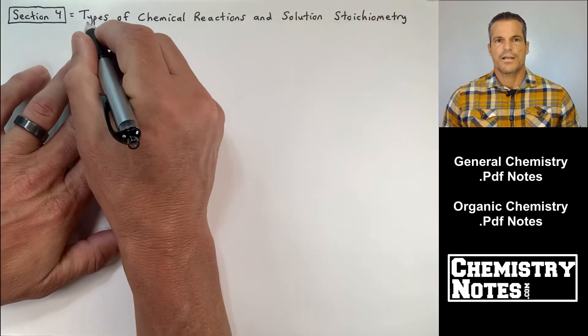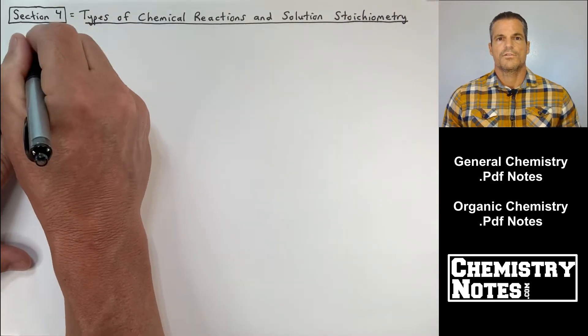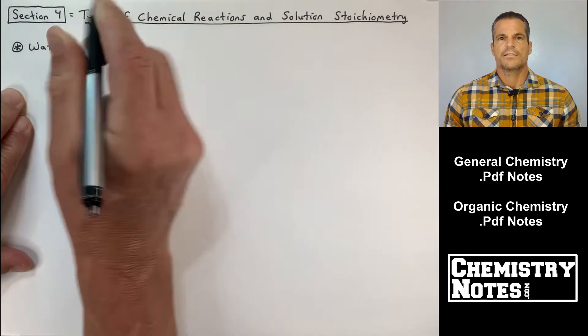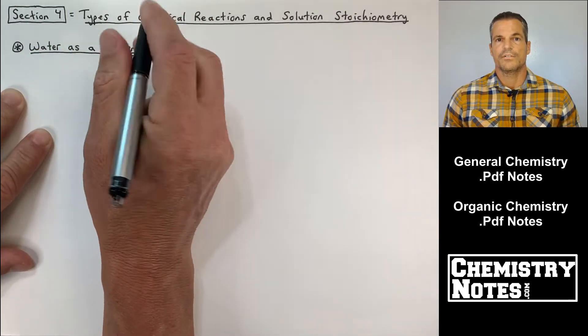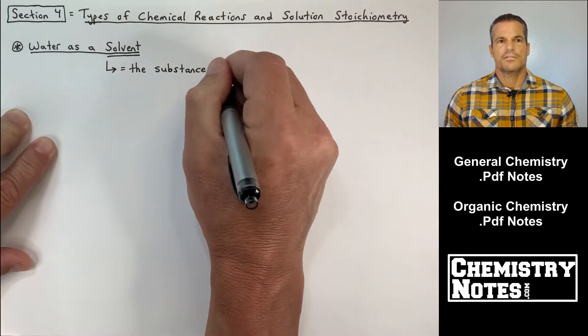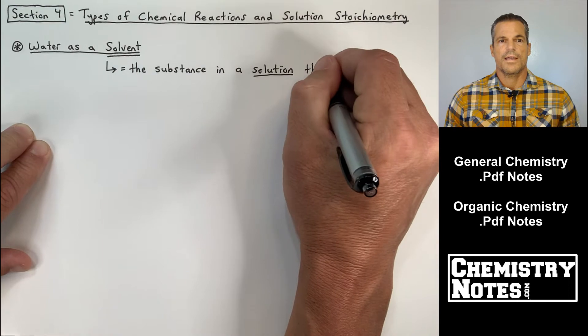So types of chemical reactions, which we'll do a little bit later on in the section, and solution stoichiometry we're going to kind of get that started, not right away because I have to introduce water as a solvent first and that's our first topic. So right there you see a star that means it's our first major topic and that's water as a solvent.